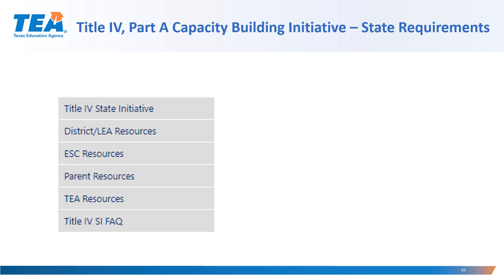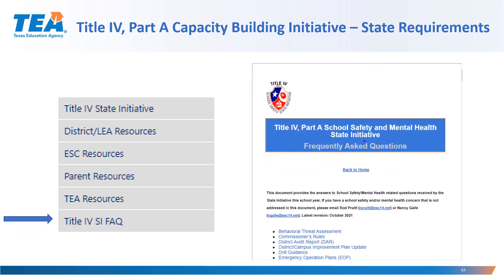On the Title IV Part A Capacity Building Initiative website, they do have information that is specific to state requirements. In order to ensure that you're not using federal funds to supplant, you must ensure that state mandated requirements are supported with state and local funds. You can find information about what those state requirements are that may be in some of the Title IV allowable use areas, but not supported with federal dollars because it's a state requirement. They have an FAQ document and links to other resources to help you. If you have any questions in those particular areas, you can always feel free to contact Rod or Nancy, and they'd be happy to help you out.